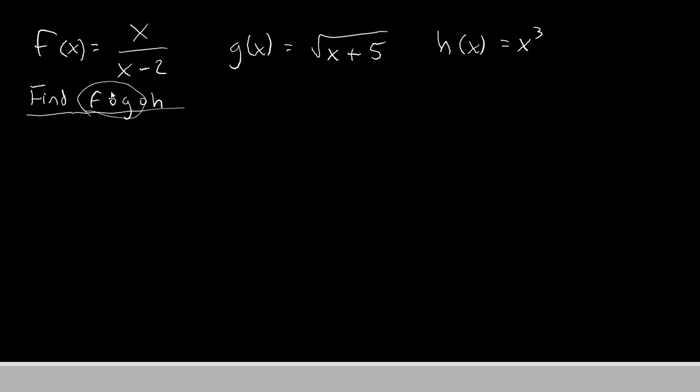Let's handle the first section, f composite g, first. Once again, we begin by writing the first letter, that's f. And f is x divided by x minus 2.